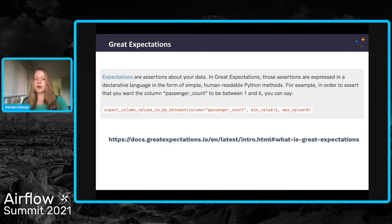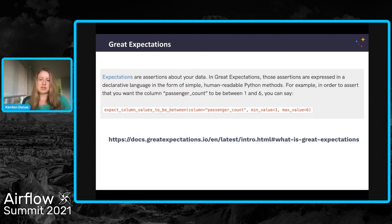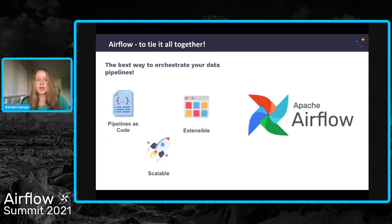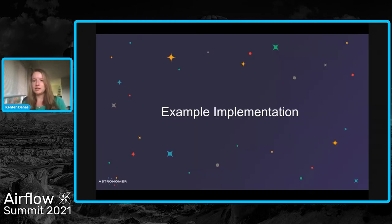In short, for this example, the way expectations work is that you create an assertion that defines how your data should look. It's really intuitive and translates pretty directly into plain English. In this particular example, I'm saying that this column should have values between one and six. Great Expectations then takes care of all the work behind the scenes to compare your data to this expectation and give a passing or failing result. And finally, in our stack, of course, we have Airflow to tie it all together.